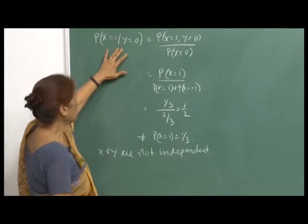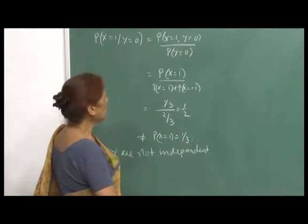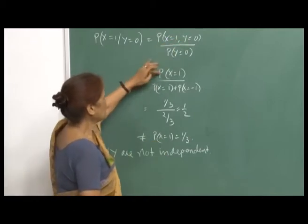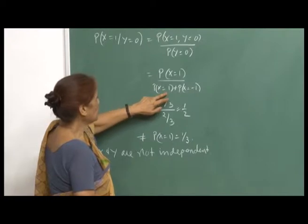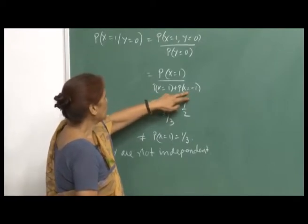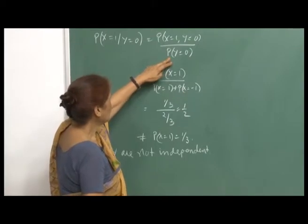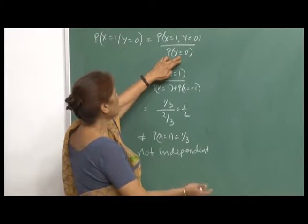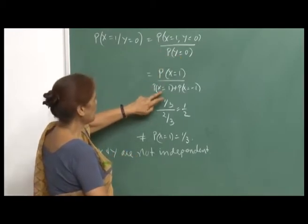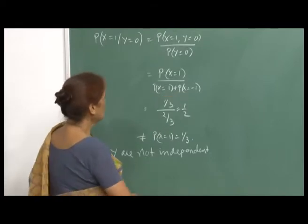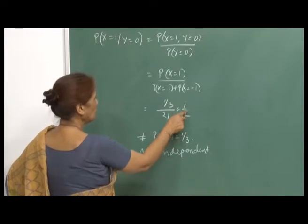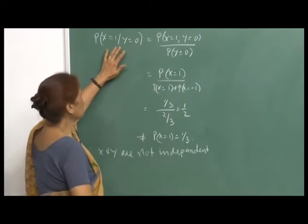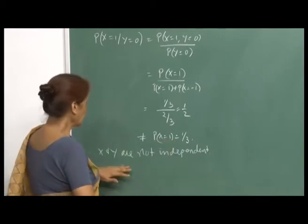P(X=1 | Y=0) equals P(X=1, Y=0) divided by P(Y=0). Y=0 when X is not 0, meaning X is 1 or X is -1. So this is (1/3) divided by (2/3), which equals 1/2. But this is not equal to P(X=1). If X and Y were independent, this conditional probability should equal P(X=1). Therefore, X and Y are not independent.